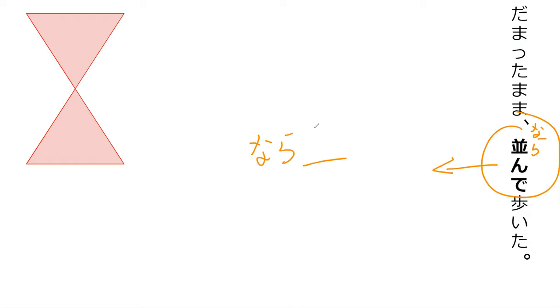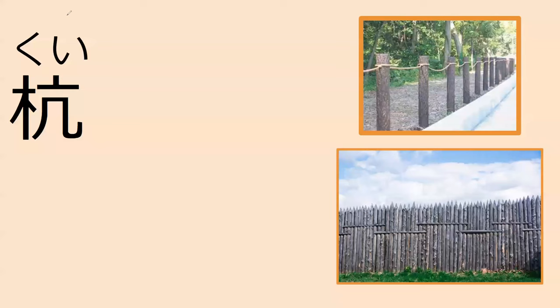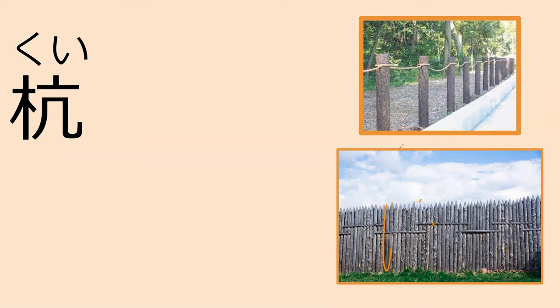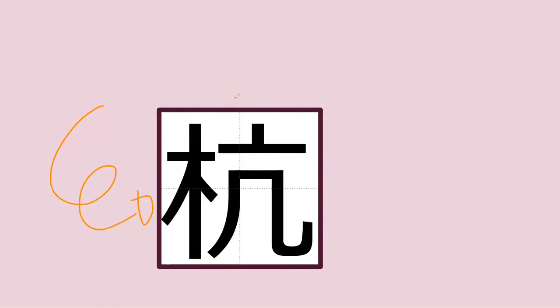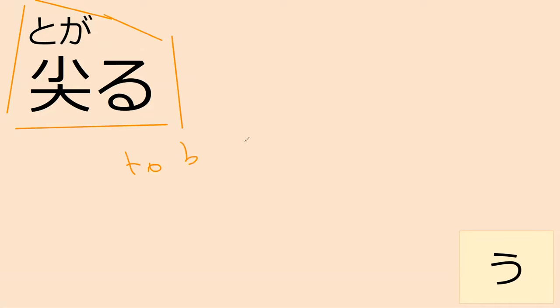How is this read? It's 'narabu' — lining up. The dictionary form is 'narabu.' Perfect. Our next new word is 'kui.' 'Kui' is a stake — normally when you think of a stake it's going to have little pointy bits. Theoretically it doesn't have to have the pointy sticks, but yeah — these are just a bunch of stakes being used to make a wall. How do you read this word? 'Kui, kui, kui.' And our next word is 'togaru' — 'togaru' is basically to be pointy.